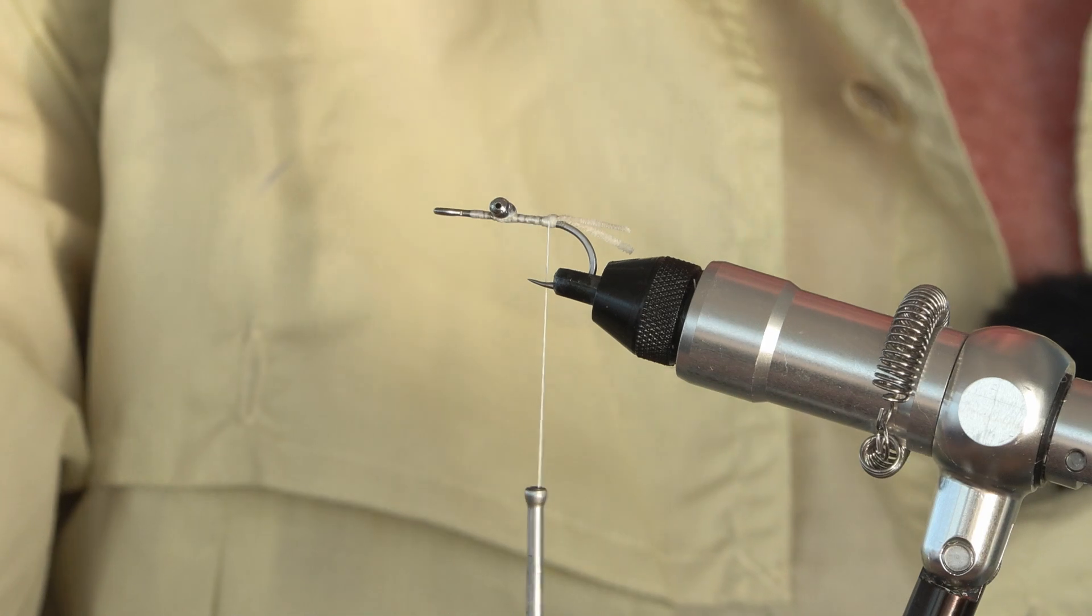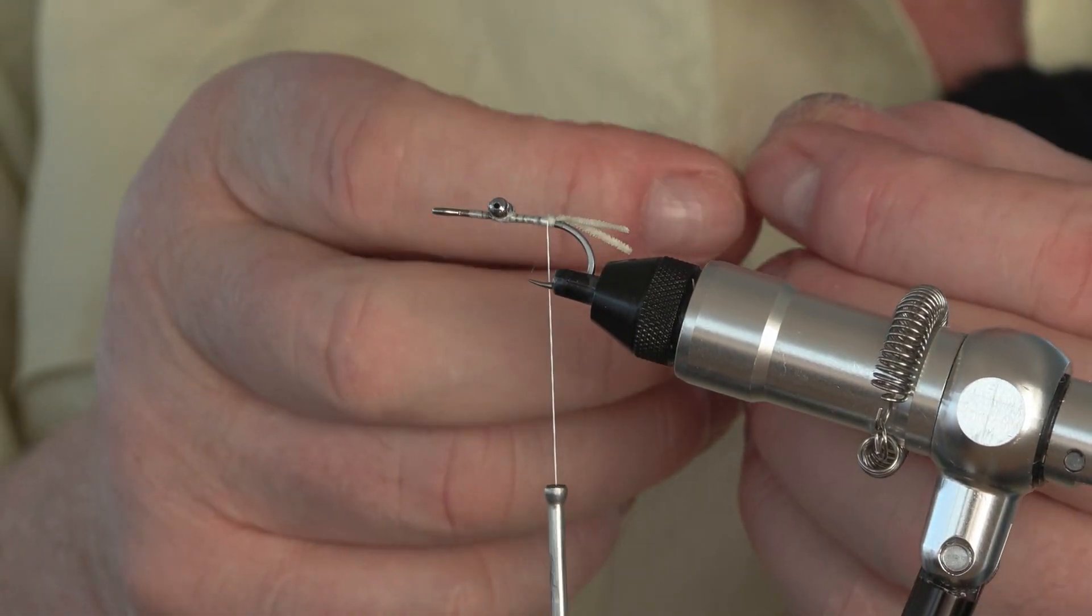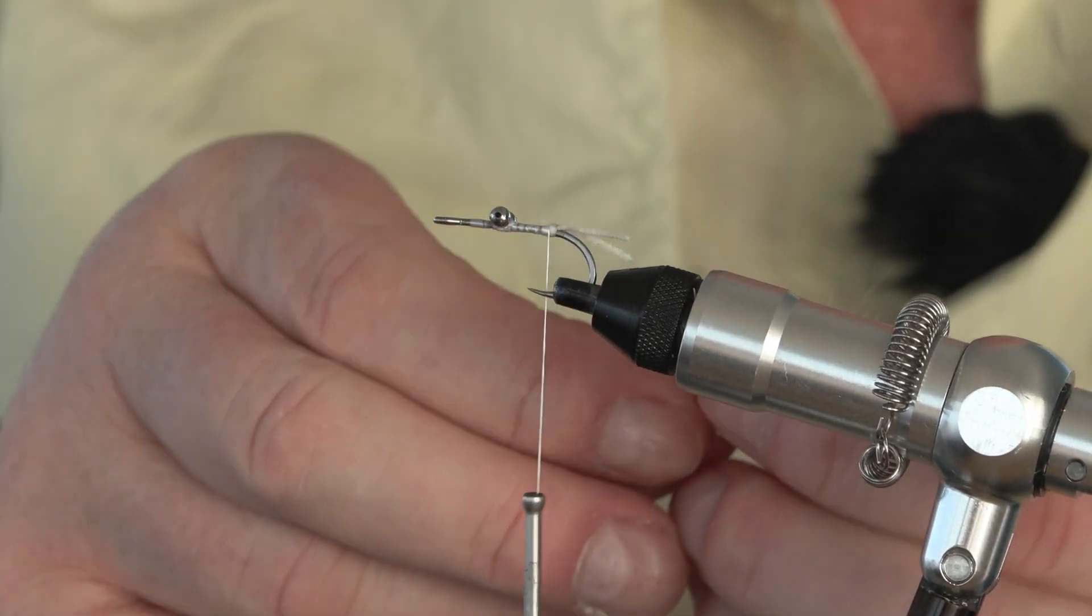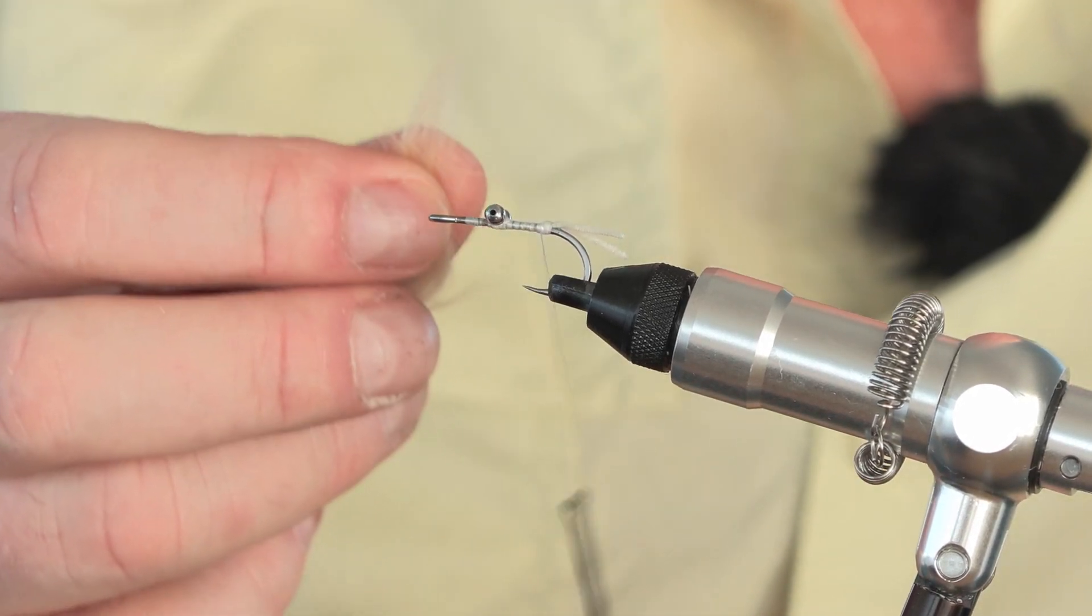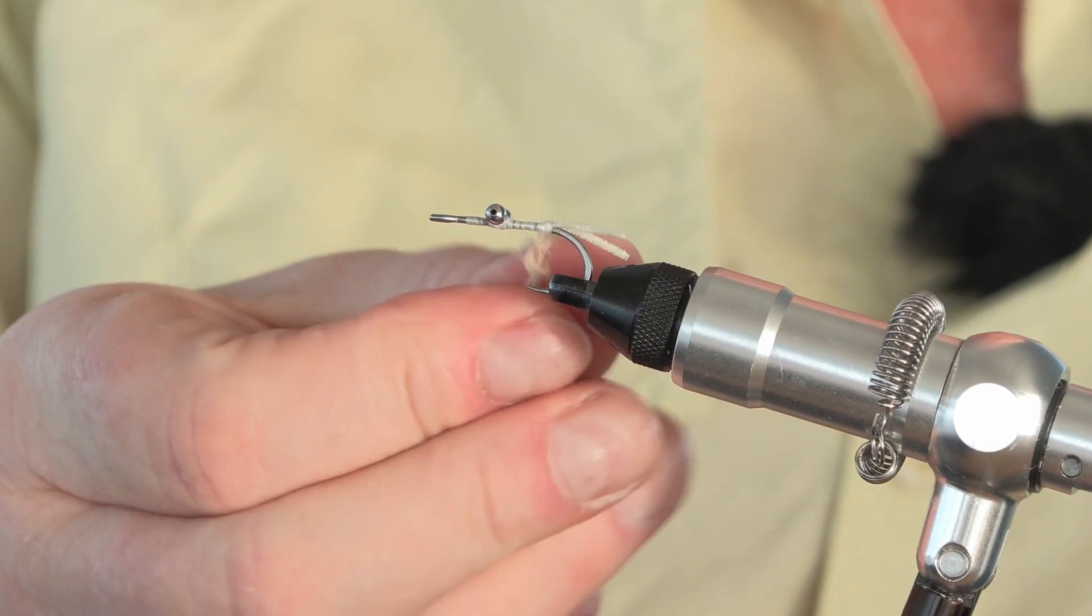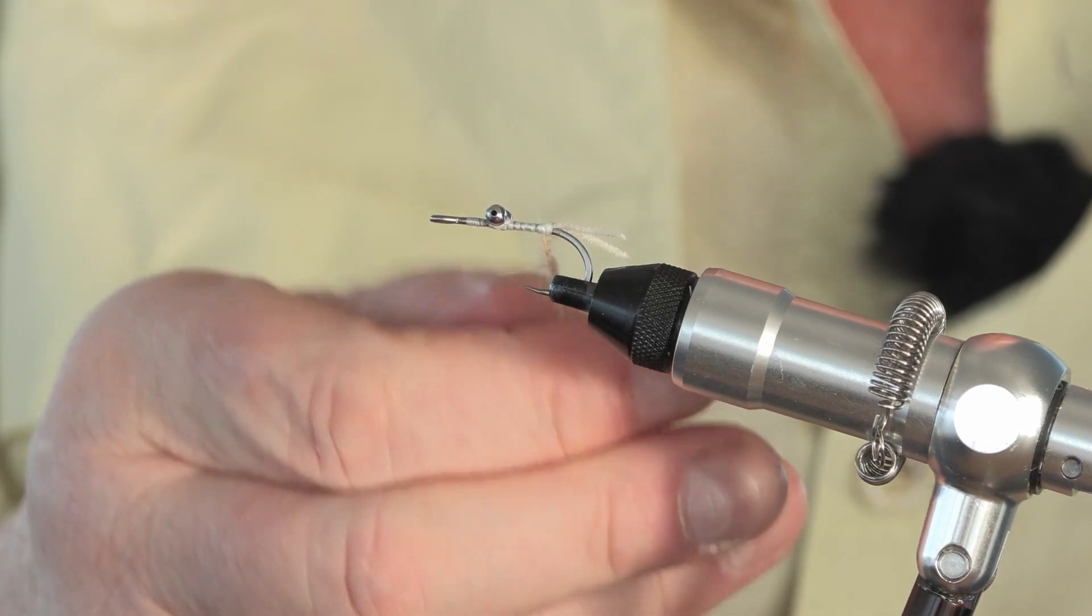Next we're going to put the body of the fly in. Now lots of gotchas have a really glittery silvery body but I find these days I prefer to dub some tan rabbit hair for the body rather than have a glittery shiny body which very often puts the fish off.